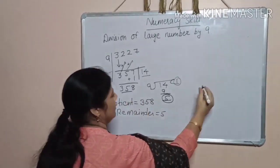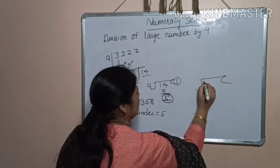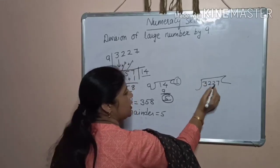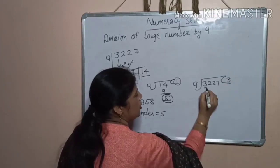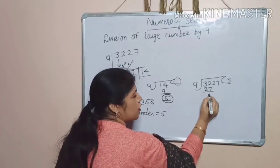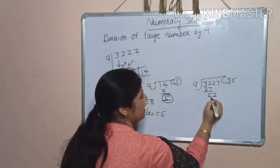You can check by traditional method. 3,227 divided by 9. 9, 3, 27. 12, minus 7, 5, 2. 9, 5,